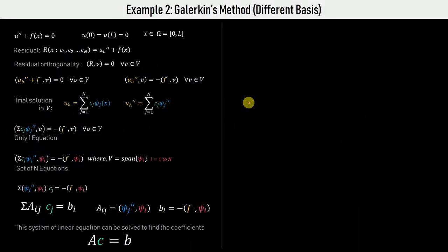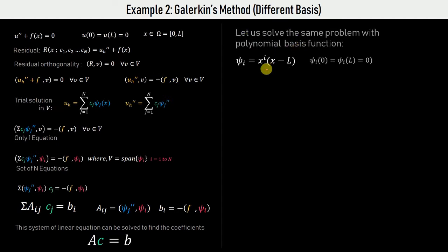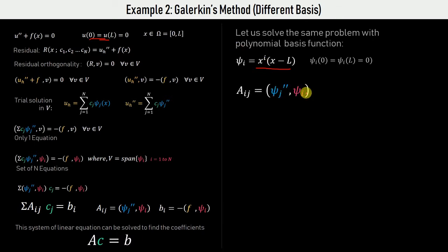Continuing example two, we now choose a different basis — a polynomial basis of the form x^(i+1) - L*x^i. Note that these basis functions also satisfy the essential boundary conditions, which is a necessary condition. Otherwise there is no point choosing them and you won't get the exact solution. We will explain why later. We now simply construct A_ij and B_i and code them directly.